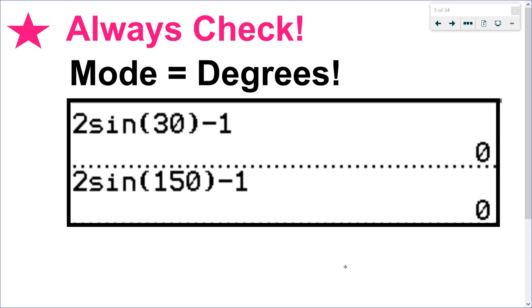For the check, I simply replace x in my original equation with each answer. You can see 2sin(30) - 1 = 0, and 2sin(150) - 1 = 0 as well. So I know I did it correctly.